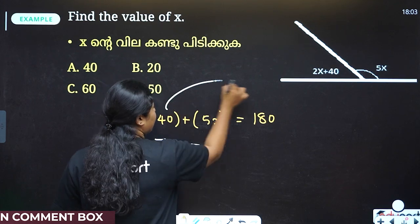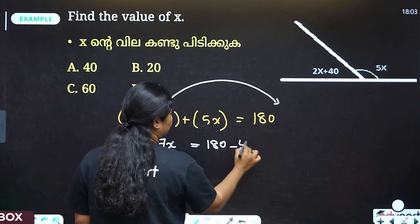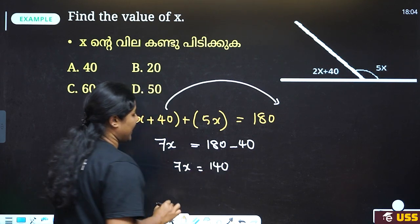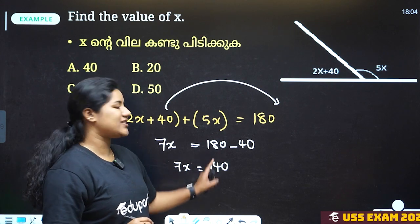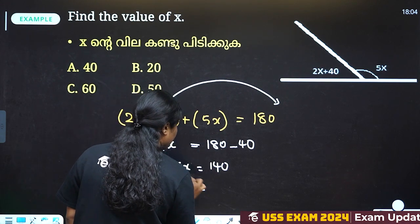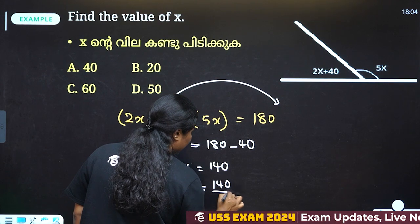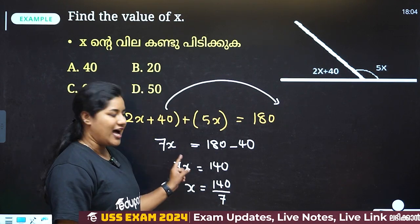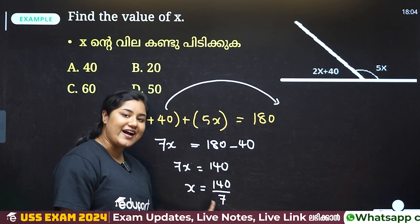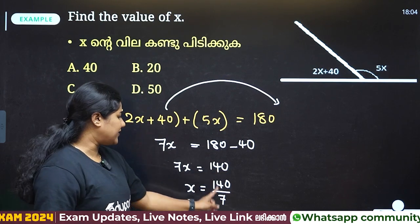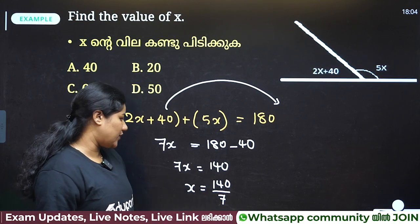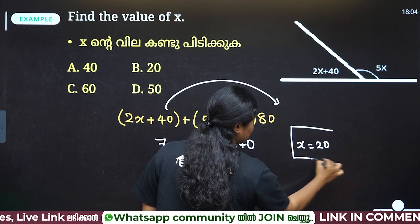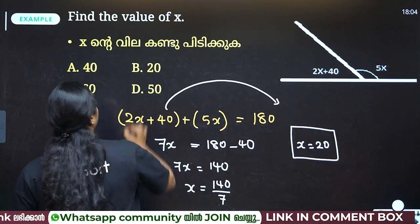We take the angle of 40 degrees: 7x equals 180 minus 40, that means 7x equals 140. x equals 140 divided by 7, which equals 20. So 140 divided by 7 is equal to 20. x is equal to 20 degrees. Option B.